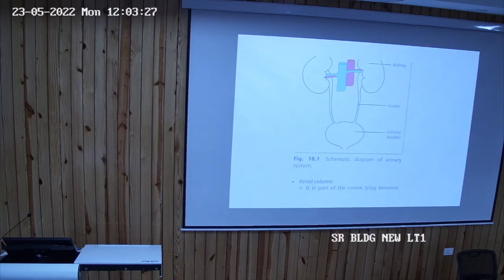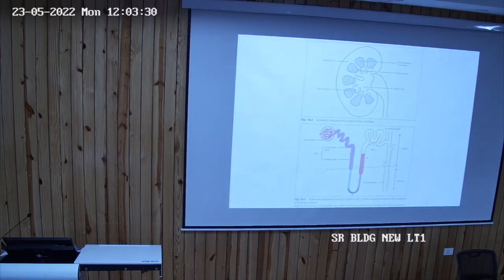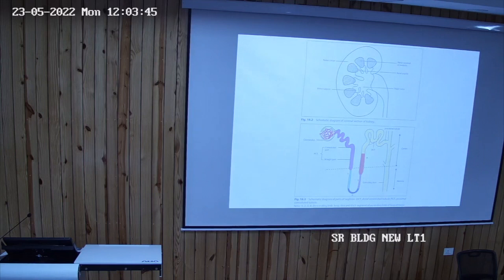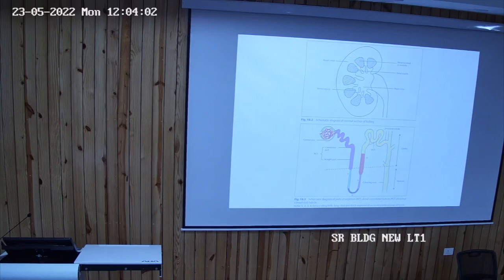The parenchyma of the kidney is divided into two parts. The outer darkly stained granular part is the cortex, and the inner part is the medulla. When we focus the slide, you will see that the medulla shows pyramids. The number of pyramids is about 8 to 13, and the bases of the pyramids face towards the cortex, while their apices face towards the sinus of the kidney.